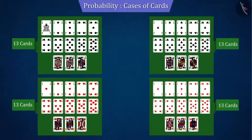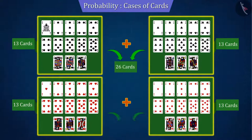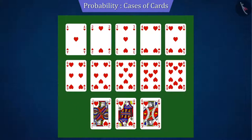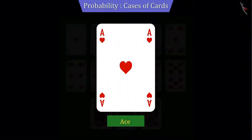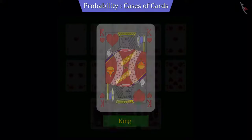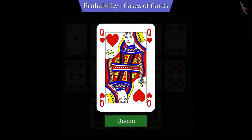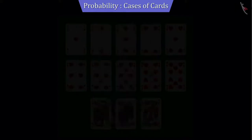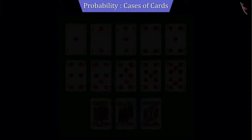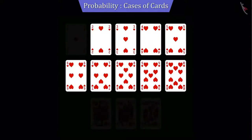Therefore, it can be said that there are 26 cards of black colour and 26 cards of red colour each. Let's discuss the group of heart cards. Each suit consists of an ace, king, queen, jack, and the digit cards 2 to 10.